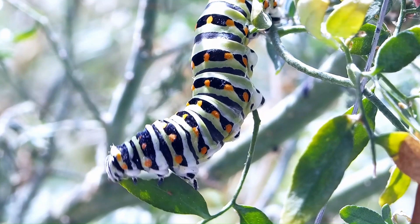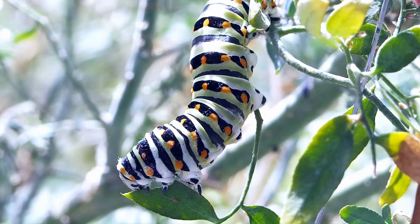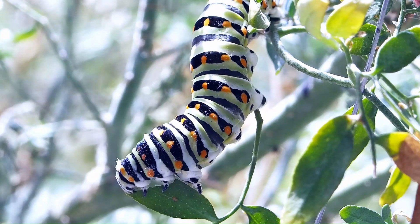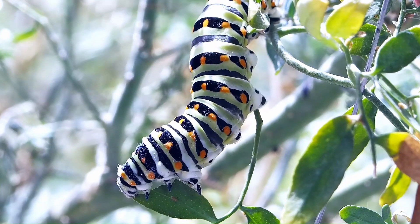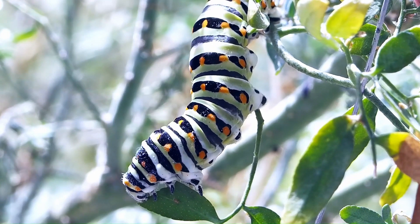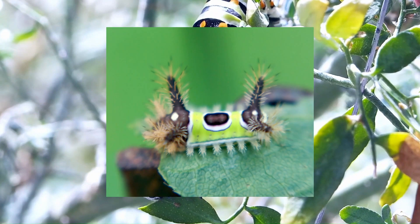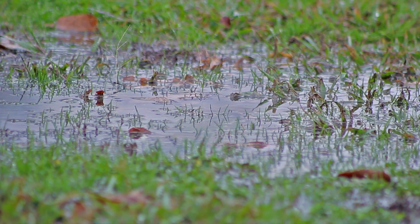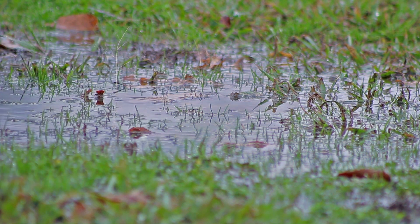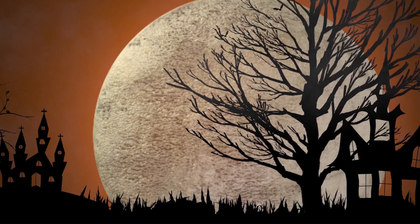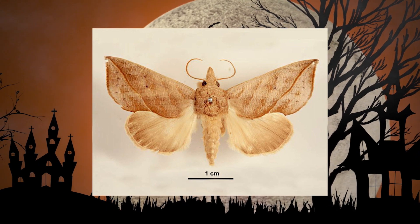Caterpillars are the larvae of Lepidoptera and possess a variety of tools that make them an exceptional larval stage. Most caterpillars are herbivorous, but predatory species do exist. They have five pairs of prolegs and can possess chemical defenses, including poisons retained from food, irritating hairs, and venomous spines. An interesting behavior possessed by Lepidopterans is mud puddling, in which they gather around mud puddles to drink mineral-laden water. Lepidopterans do this as they require salts in their diet that the nectar of flowers does not contain. This need for salt has led to interesting developments in certain species — for example, male vampire moths get their vital salts from drinking blood.